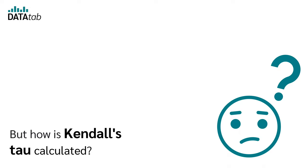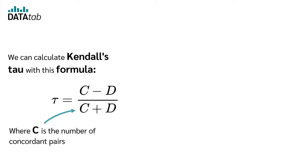But how is Kendall's Tau calculated? We can calculate Kendall's Tau with this formula, where C is the number of concordant pairs and D is the number of discordant pairs. What are concordant and discordant pairs?